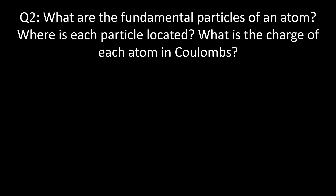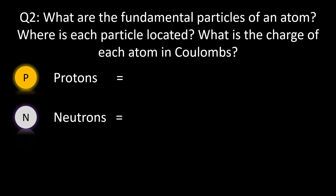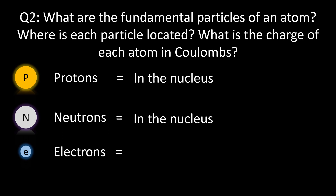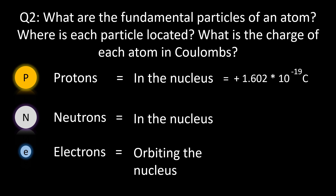Question 2: What are the fundamental particles of an atom? Where are they located, and what are their charges in Coulombs? The fundamental particles of an atom are protons, neutrons, and electrons. Protons and neutrons reside in the central nucleus, while electrons orbit the nucleus in the surrounding space. Protons have a positive charge of +1.602×10⁻¹⁹ C, electrons have a negative charge of −1.602×10⁻¹⁹ C, and neutrons have no electric charge.